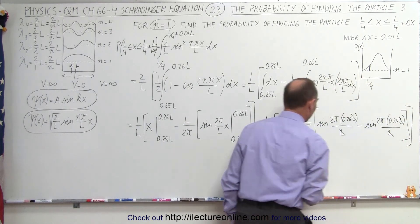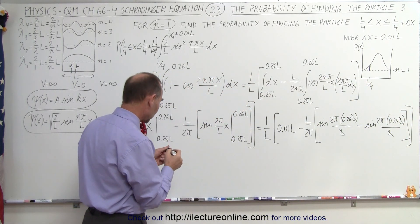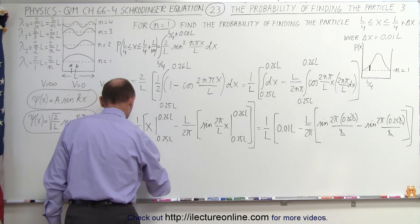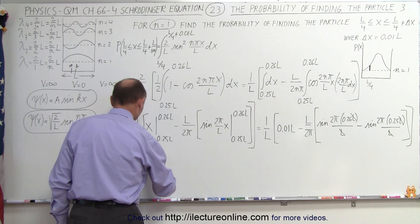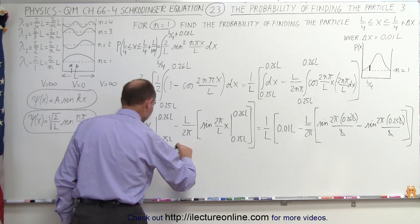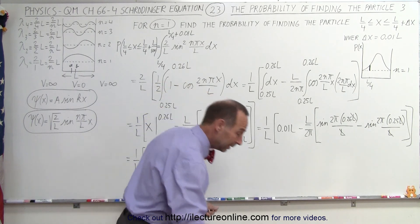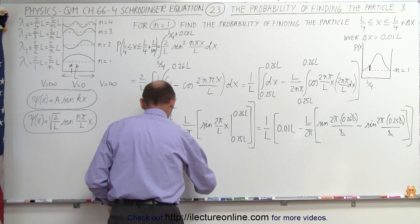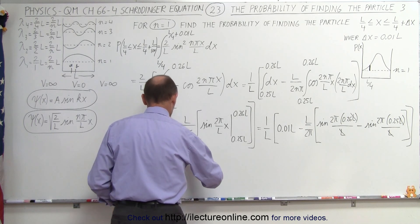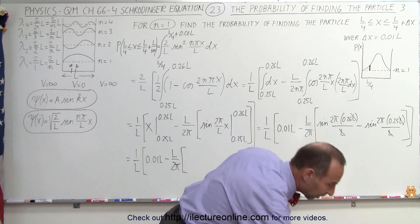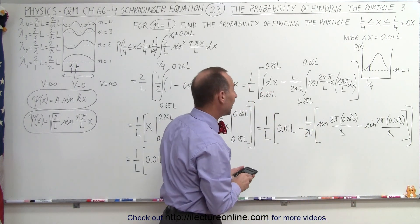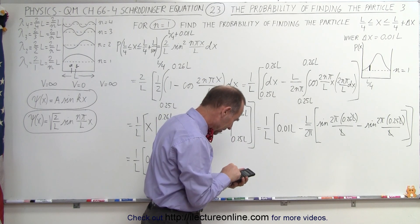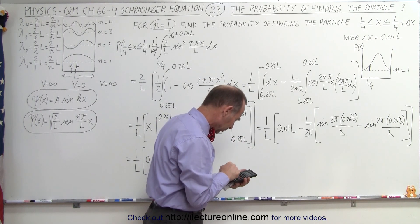I still need a closing bracket. So I think for that, we're going to need a calculator to work out what that is equal to. So this is equal to 1 over L times 0.01L minus, and I should probably put that constant in there, L over 2 pi. So minus L over 2 pi times. So now we have the sine of 2 pi times 0.26. And that needs to be in radians. I need to make sure my calculator is in radians. So let's put it in radian mode.